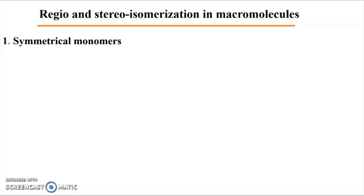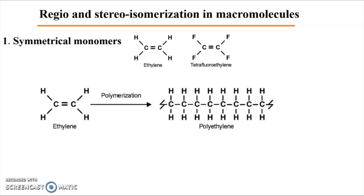In this part, we'll consider the regio and stereo isomerization in macromolecules. The isomerization in macromolecules is monomer-dependent. If we consider first the case of symmetrical monomers, like ethylene and tetrafluoroethylene, during polymerization the monomers could be added via this carbon or this carbon. Since there is no substituent and it is symmetrical, the addition will be the same.